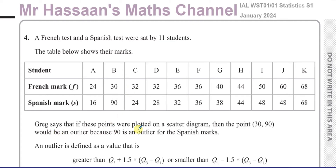Greg says points were plotted on a scatter diagram, then the point (30, 90) would be an outlier because 90 is an outlier for the Spanish marks. An outlier is defined as a value greater than the upper quartile plus 1.5 times the interquartile range, or smaller than Q1 minus 1.5 times the interquartile range.